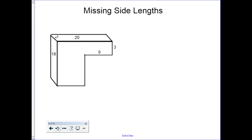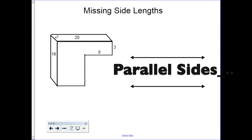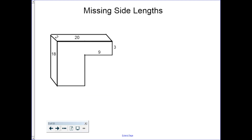Something many students struggle with is what if there are missing side lengths. Notice that I have another composite figure, but we don't know what this side length and this side length are. One or both of those side lengths will be needed in order to find the volume of this composite shape. What you're going to do is look at parallel sides — take the longest lines in the base, the 20 and the 18, and use those to compare to the other sides to figure out our missing parts.